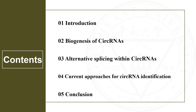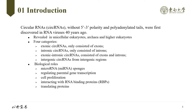I divided it into five main sections. Circular RNAs are covalently closed RNA molecules that typically comprise exonic sequences and are spliced at canonical splice sites. They were first discovered in RNA virus 40 years ago and later were reviewed in unicellular eukaryotes, archaea, and higher eukaryotes. Based on their origin, circular RNAs can be grouped into four categories: exonic circular RNAs, intronic circular RNAs, exonic-intronic circular RNAs, and intergenic circular RNAs.